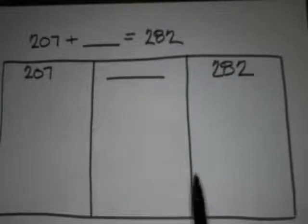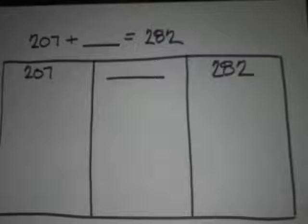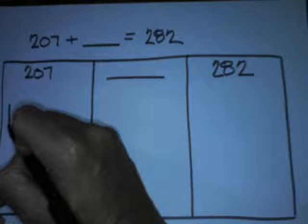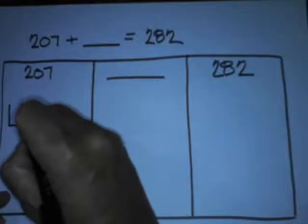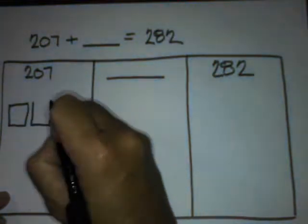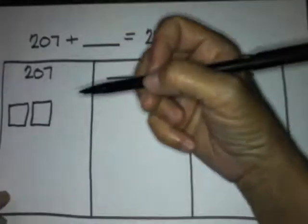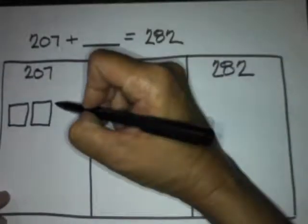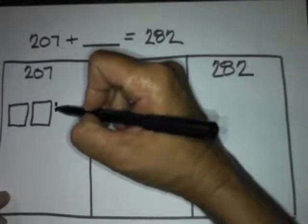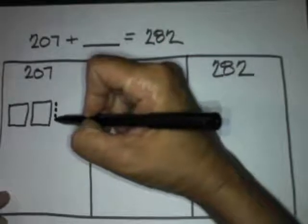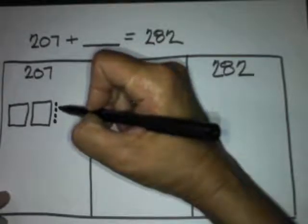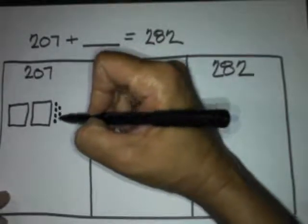First we draw 207. Who could raise their hand and tell me how to draw 207? Emma? 100, 200, and 201, 202, 203, 204, 205, 206, 207.